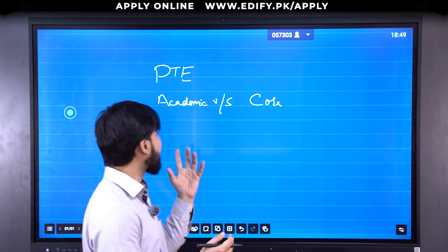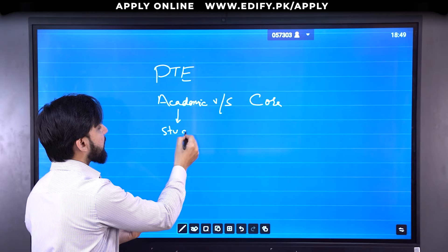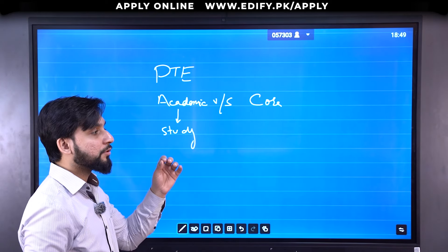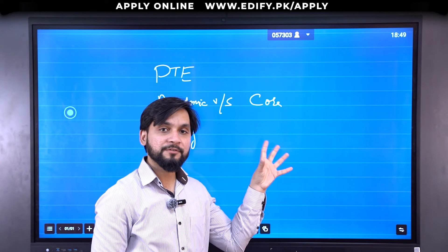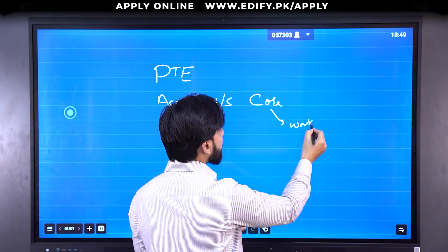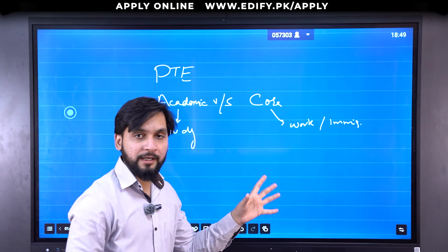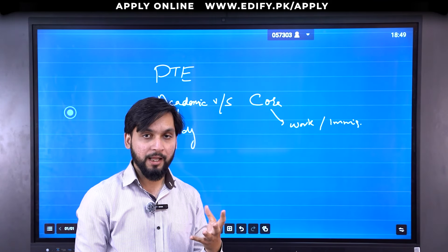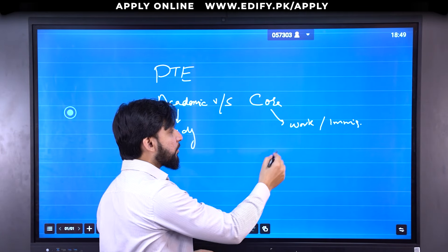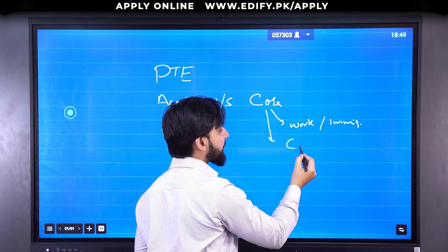First of all, PTE Academic is for those whose purpose is to study. PTE Core will specifically cater to work or immigration. If you want to go for work or immigration, PTE Core is only acceptable in Canada.